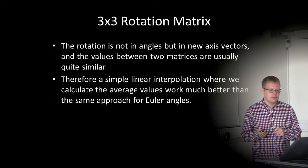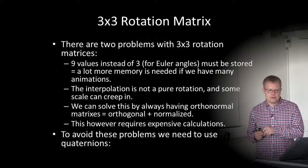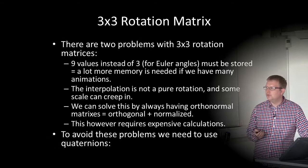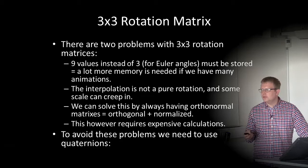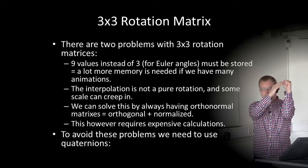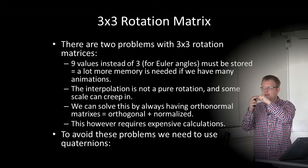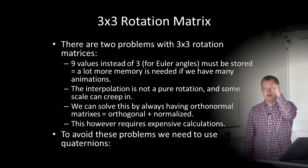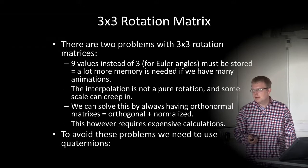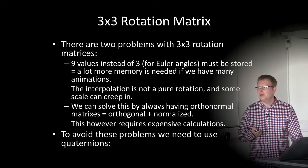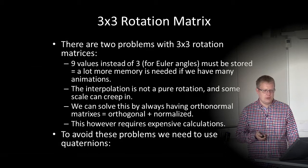So we have solved some problems. However, there are two major problems with 3×3 rotation matrices. First, we need nine values instead of three as with Euler angles — much more memory is needed. Second, the interpolation is not a pure rotation: if we linearly interpolate between two positions, the arm will be slightly scaled in the center because this is not a linear movement — it follows a curve, so some scale can creep in. We can solve this with orthonormal matrices, but they require expensive calculations. So it's not a good way to go.